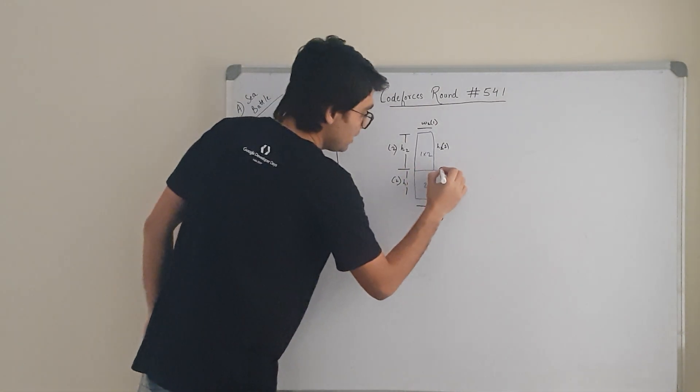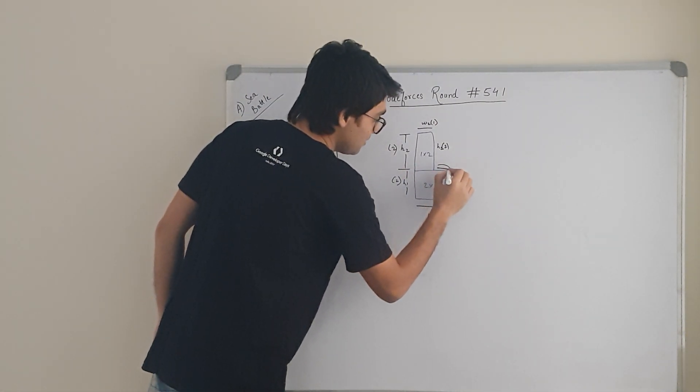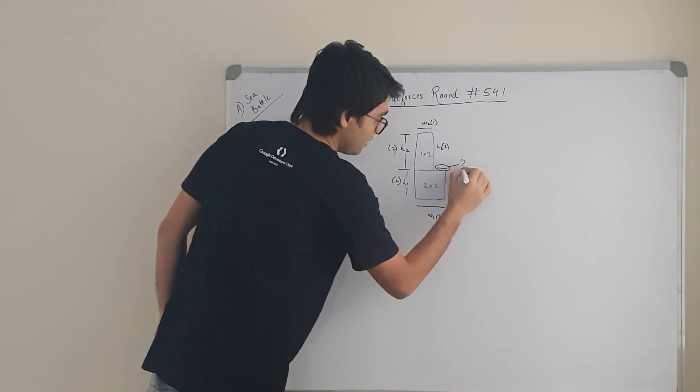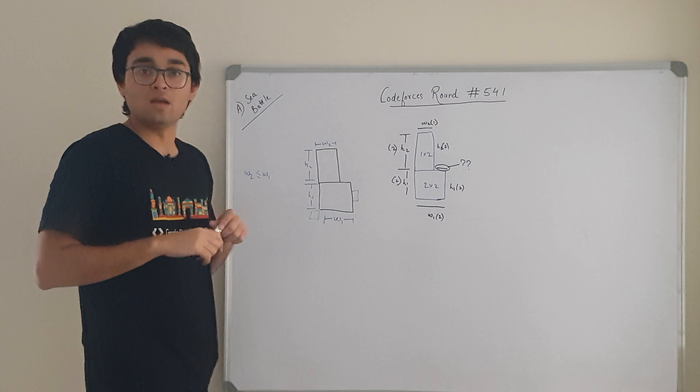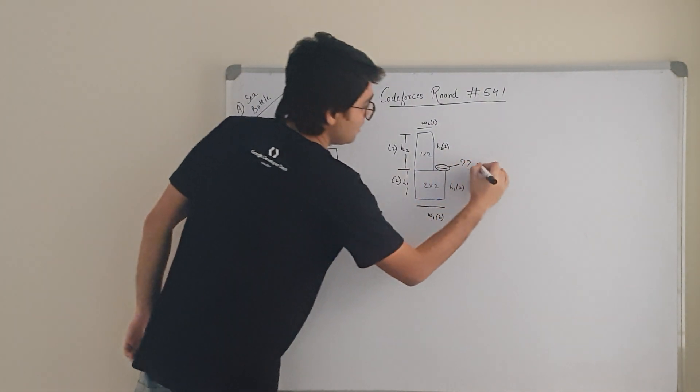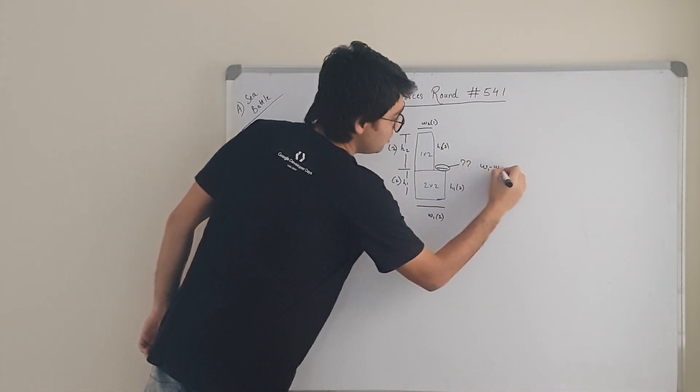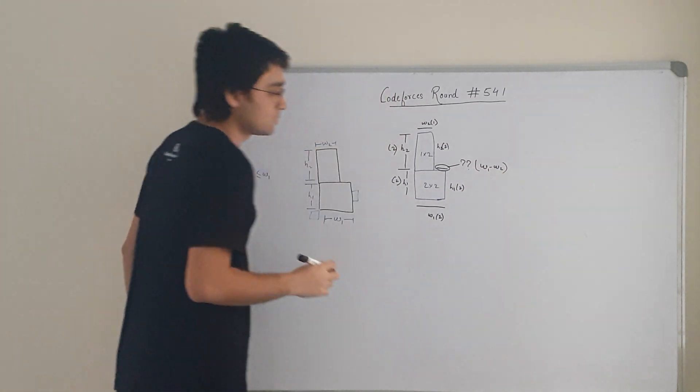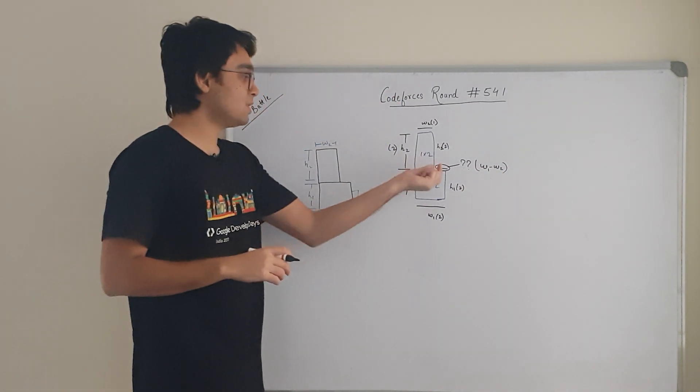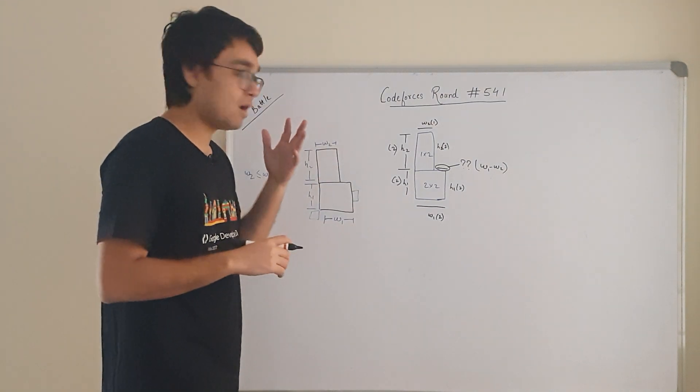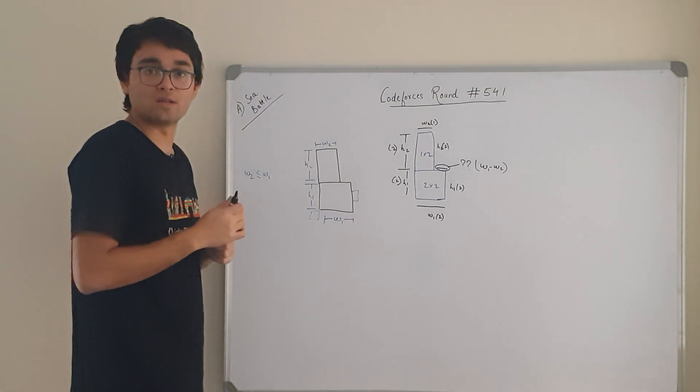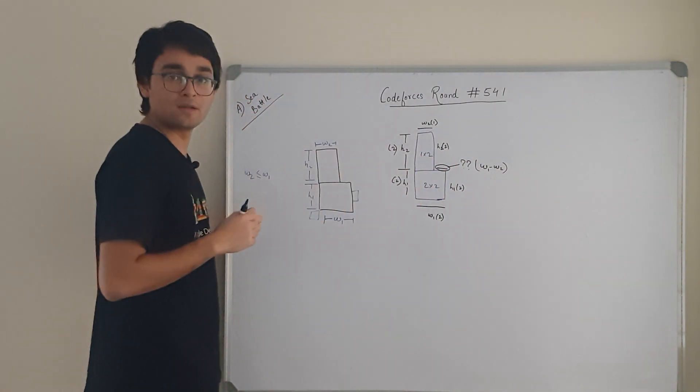Now, here also I will get some neighboring cells. But how many neighboring cells will I get here? Here we will get W1 minus W2 neighboring cells. Why? Because the difference will give me the neighboring cells which I will be getting here which will be sharing common side or corner. W1 minus W2 will be considered here.